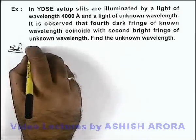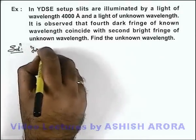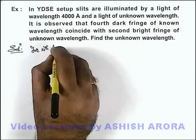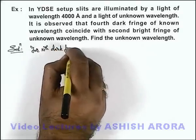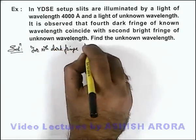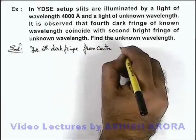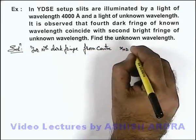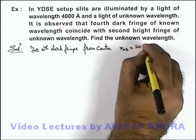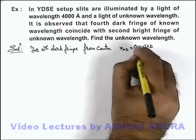So here we can write for nth dark fringe from center, the distance x_nd we can write this as (2n-1)λD/2d.